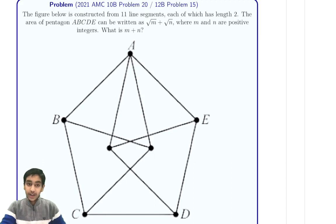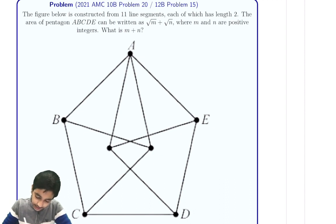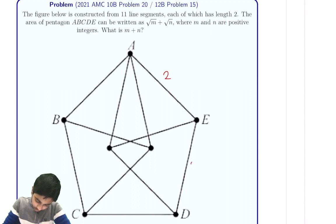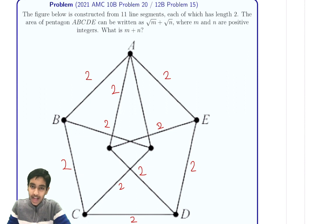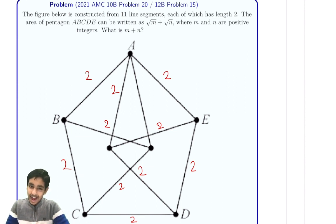Hi everyone! In this video, we're going to explore the solution to the 2021 AMC 10B problem number 20. We've got 11 line segments in this figure, each with length 2. 11 line segments all are 2. Find the area of the pentagon — strange, right?